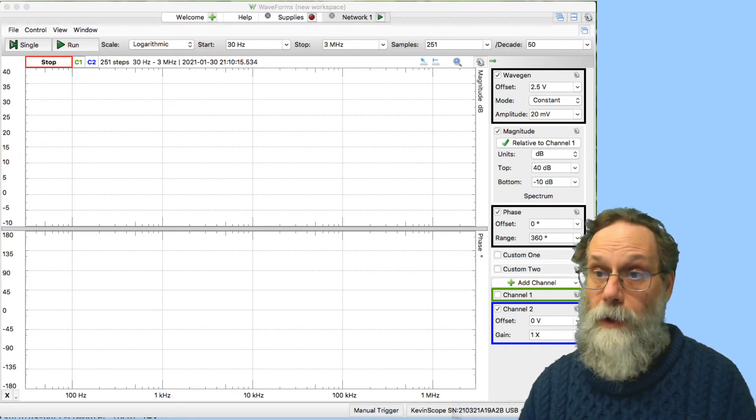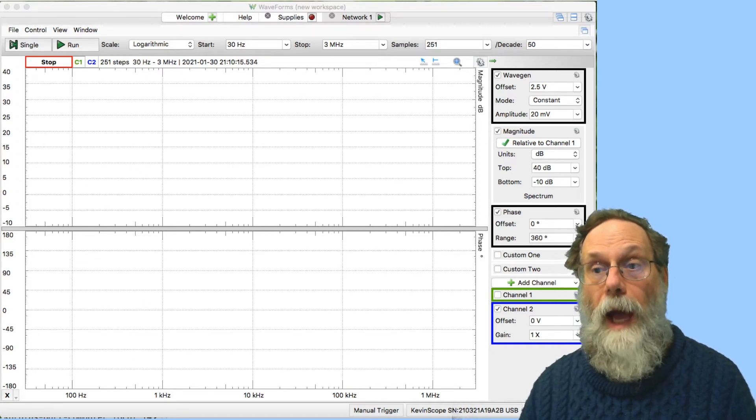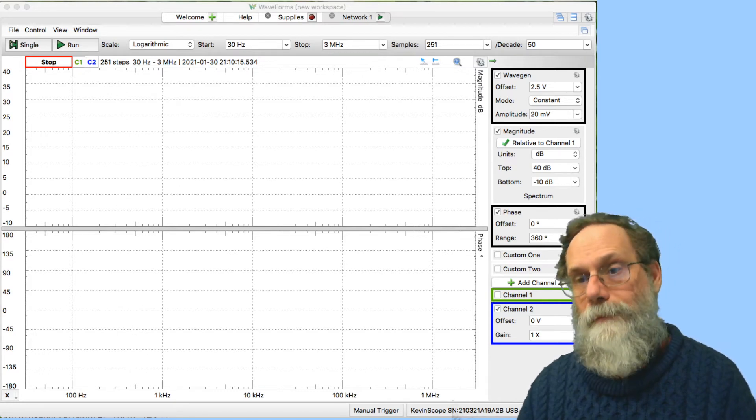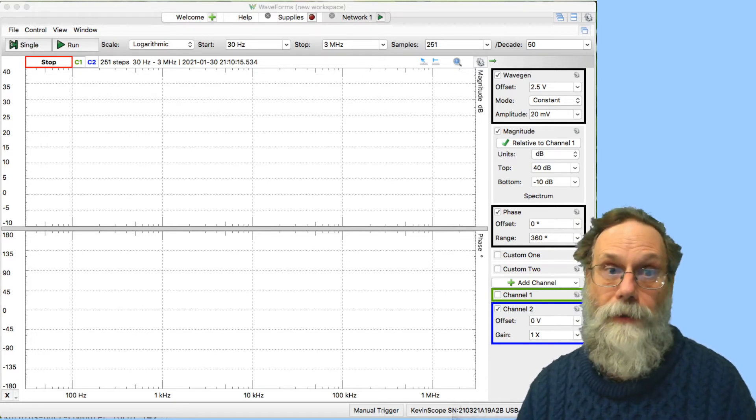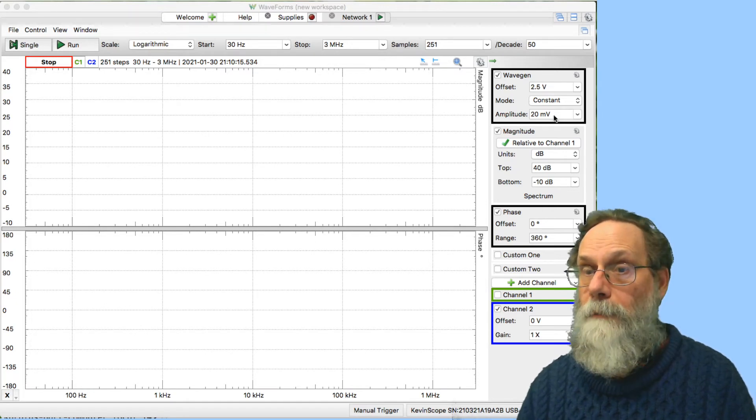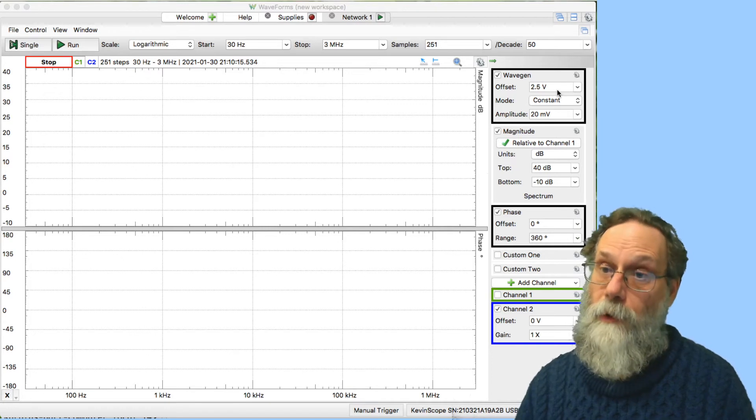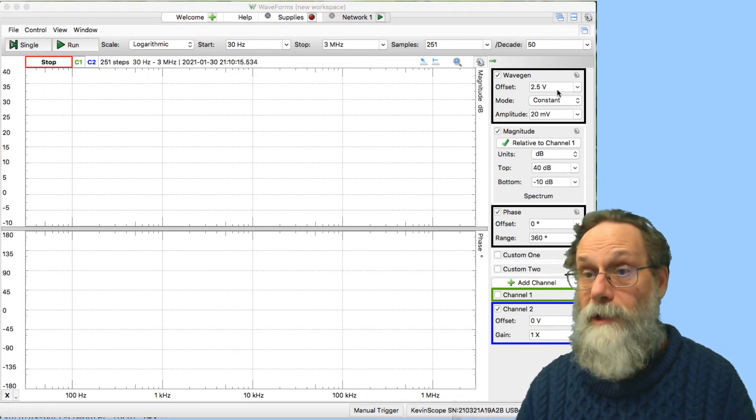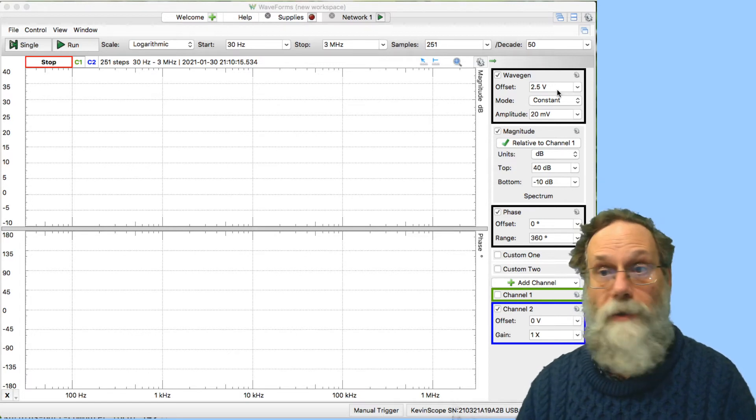On channel 1, I'm looking at the input to the filter. On channel 2, I'm looking at the output of the filter. I'm using the network analyzer to excite the filter with a 20 millivolt input, offset by 2.5 volts. The offset here really doesn't matter because that capacitor is blocking the DC offset.